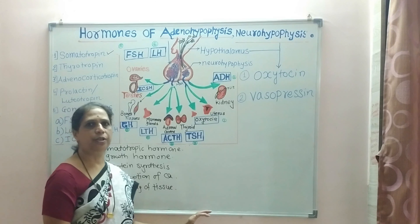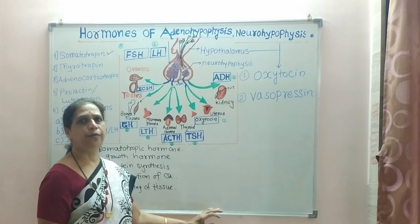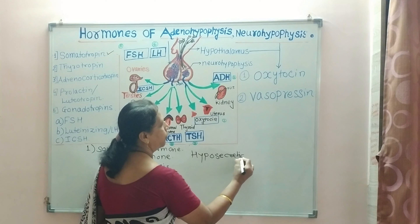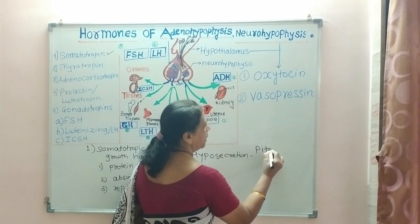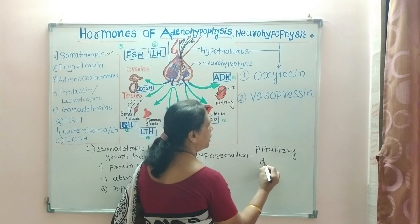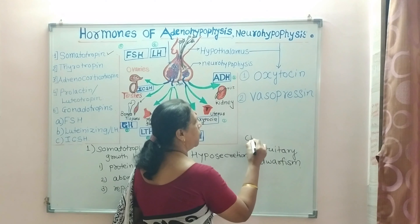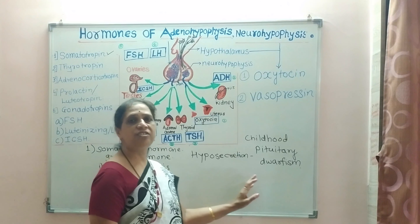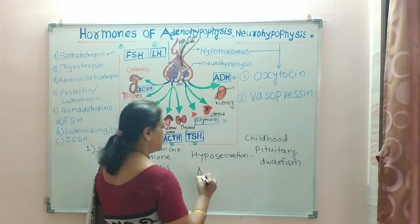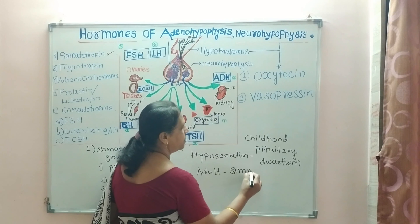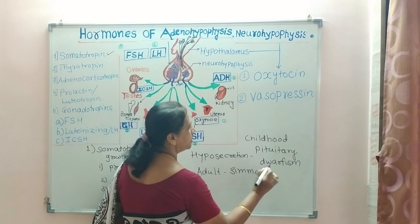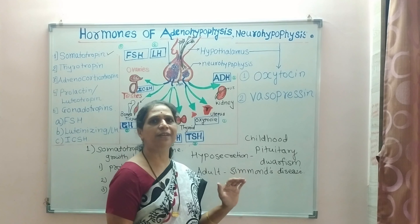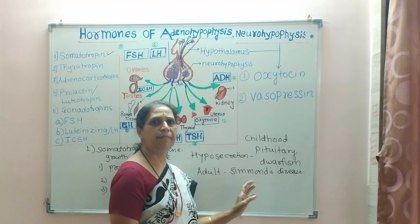If hyposecretion or hypersecretion of growth hormone takes place, it causes different disorders. Hyposecretion — that is, less secretion — of growth hormone in childhood causes pituitary dwarfism, which is stunted growth. In adults, hyposecretion is called Simmond's disease, in which the person has very stunted growth and there is degeneration of sex organs, and the person may be sterile.